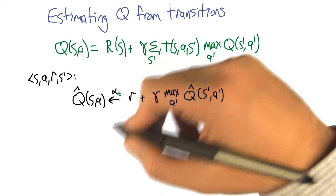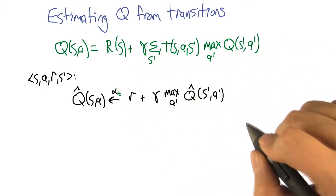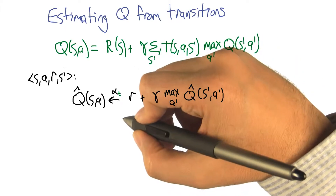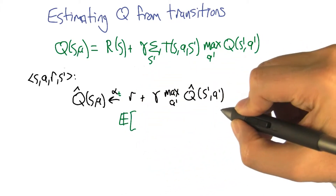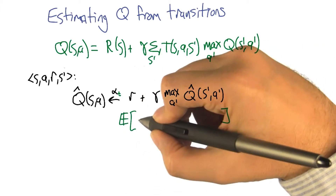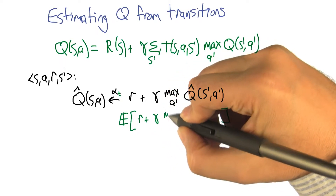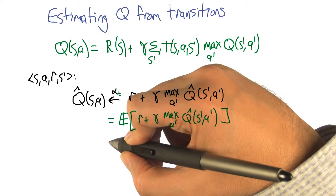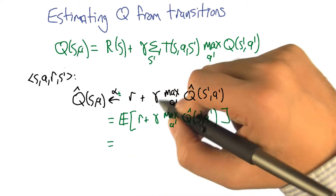So what would, based on what we just talked about, Charles — what would this actually be computing? Well, it would be computing the average value that you would get for following kind of the optimal policy after you take this particular action. Yeah, it's trying to go to this expected value.